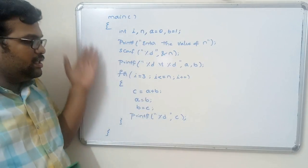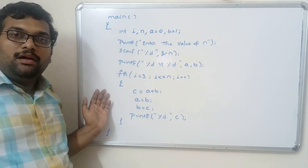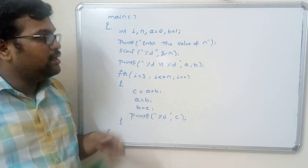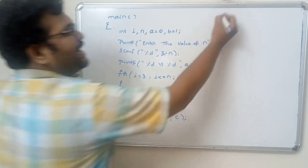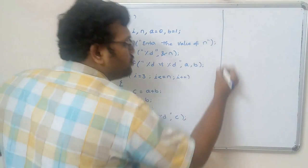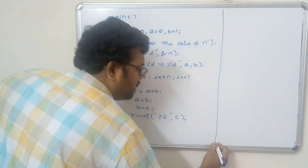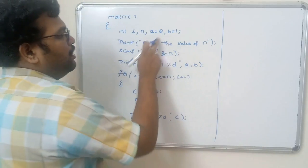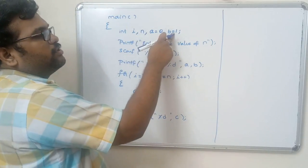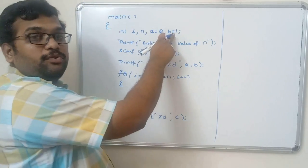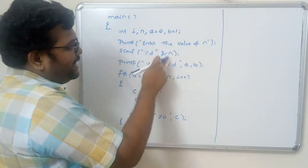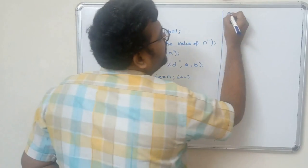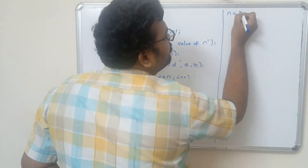This is a simple program to implement the Fibonacci series. Let us trace through it to verify the answer. I have declared a equal to 0 and b equal to 1, and we read n equal to 5.